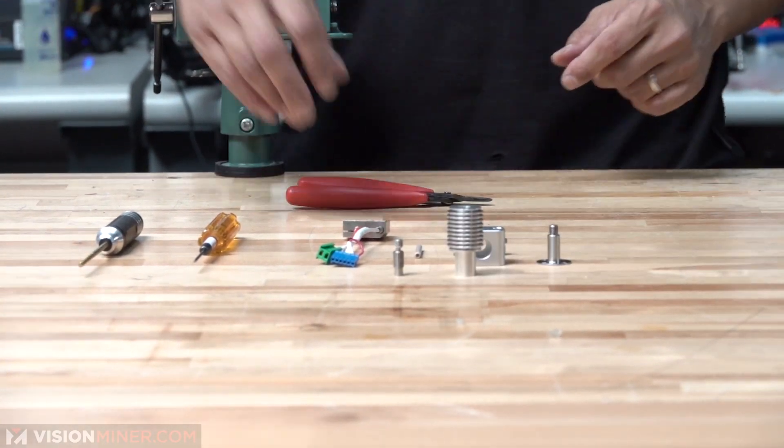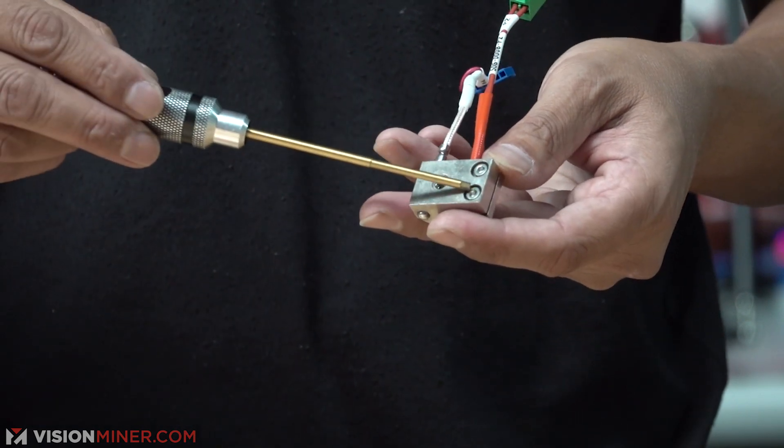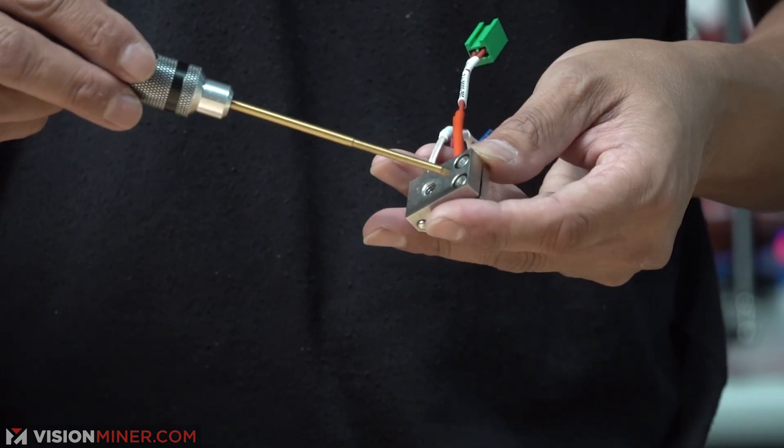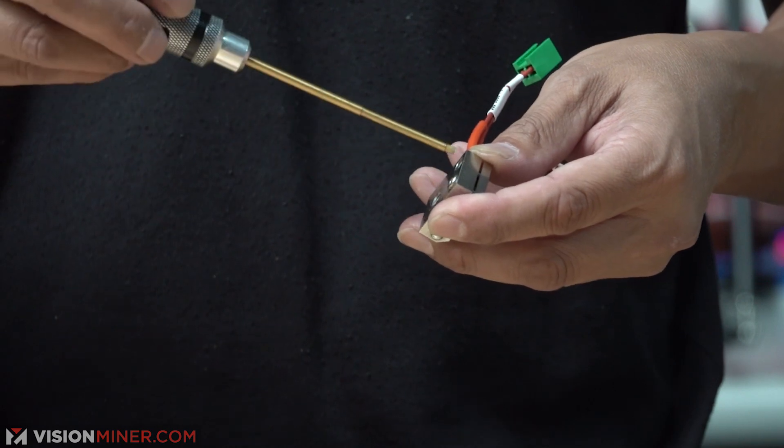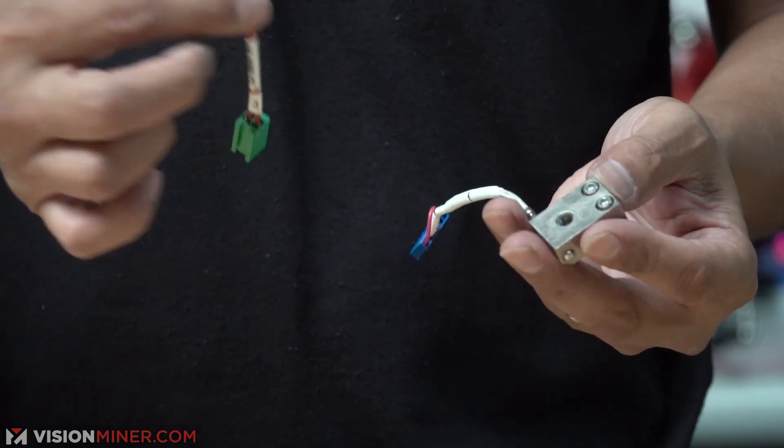Next, we go down to the heat block. Now, you take a 2.5 millimeter hex and then you will take out these two screws here. That's holding the heated element. Okay, take this off. That just come right out.